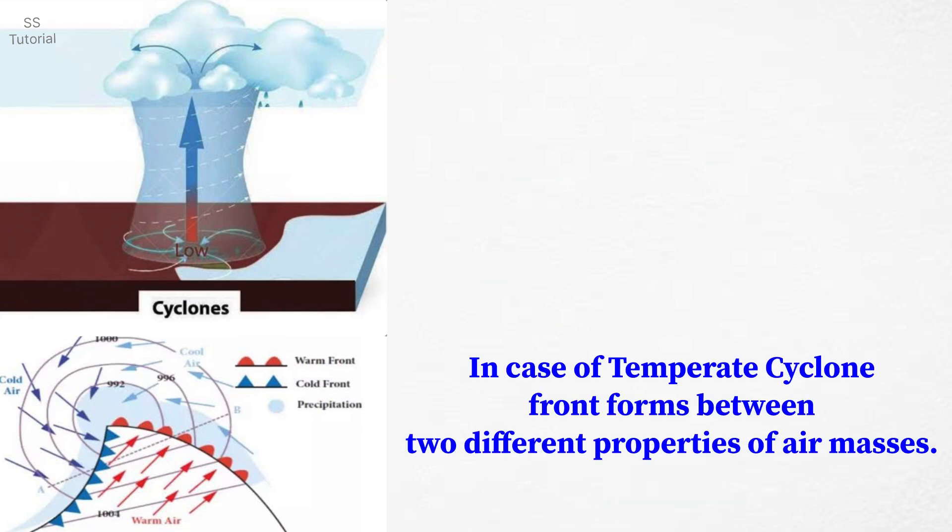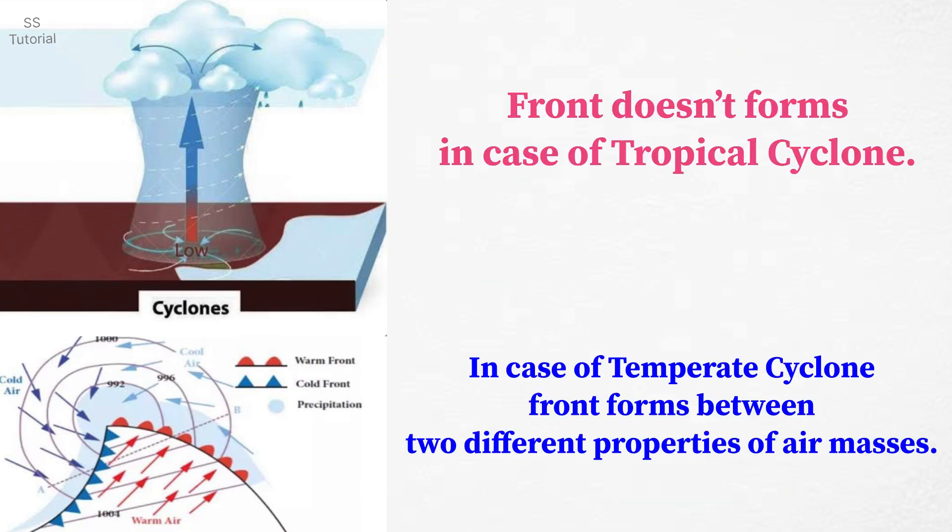In case of temperate cyclones, a front forms between two different properties of air masses. But a front does not form in case of a tropical cyclone.